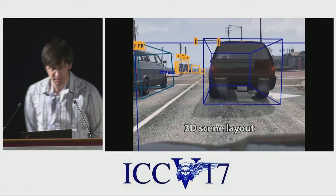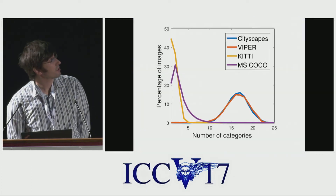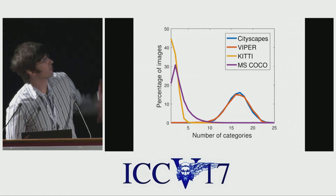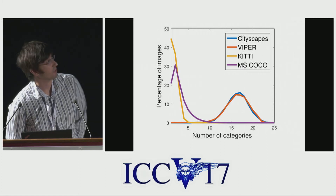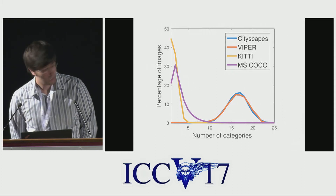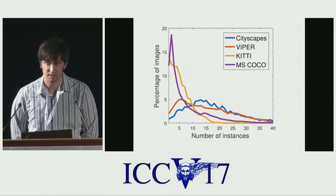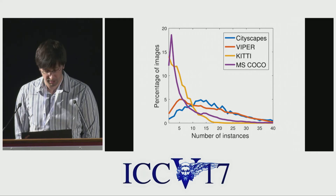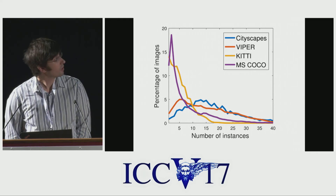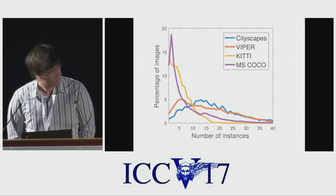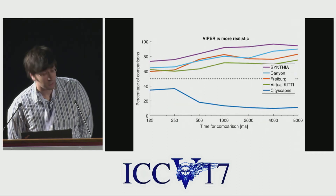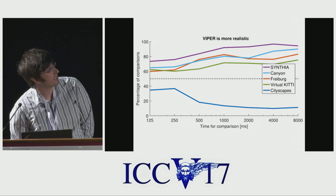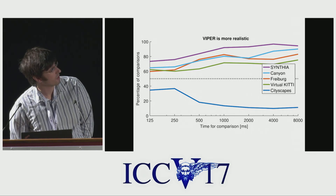We conduct statistical analysis showing that the composition of our scenes — of the Viper dataset, as we call it, for visual perception — closely matches the structural composition of real-world datasets such as Cityscapes. We further validate the realism of our dataset with perceptual experiments comparing our dataset to other synthetic datasets, and find that ours is the most realistic.